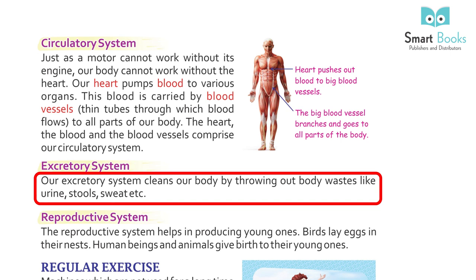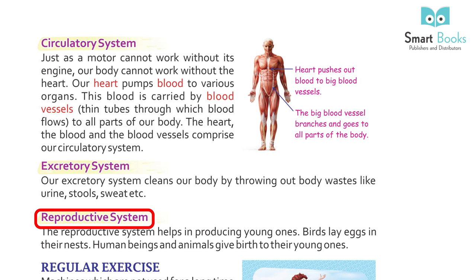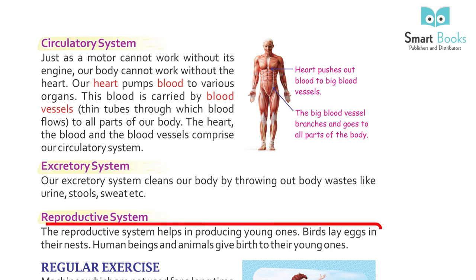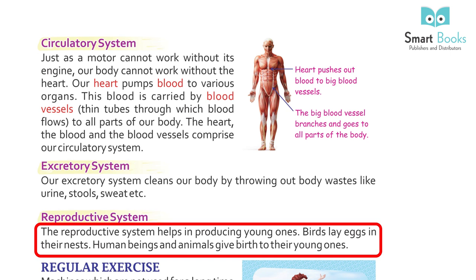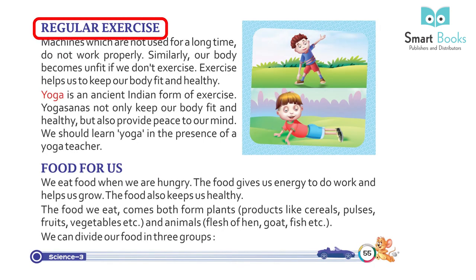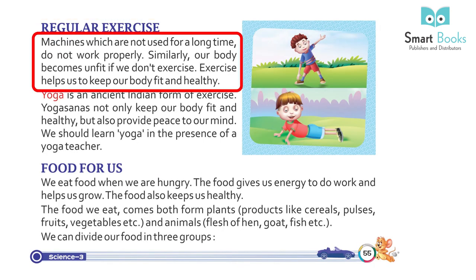Excretory system: our excretory system cleans our body by throwing out body waste like urine, stools, sweat, etc. Reproductive system: the reproductive system helps in producing young ones. Birds lay eggs in their nests; human beings and animals give birth to their young ones.